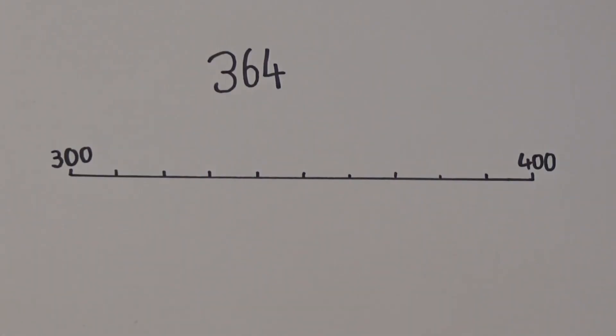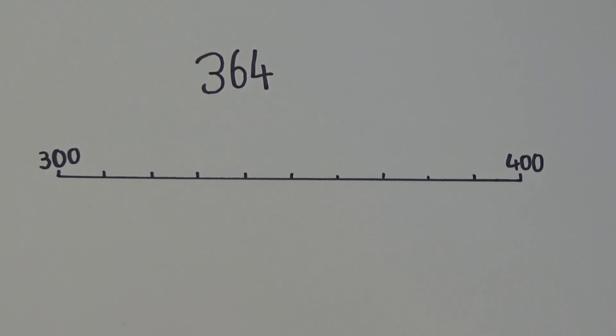I then need to write 364 on my number line. 364 is just before halfway between 360 and 370, so I need to count up to 360 and then position 364.